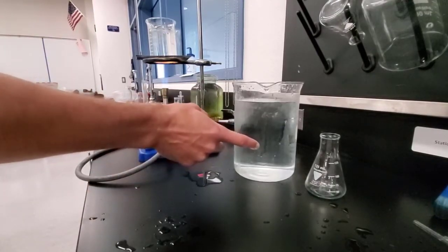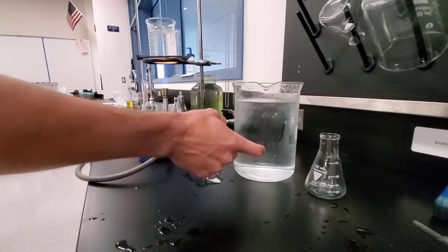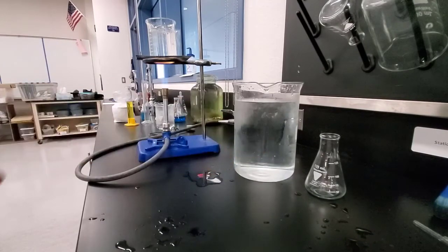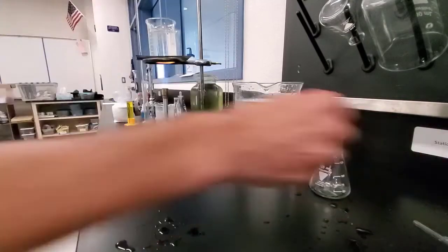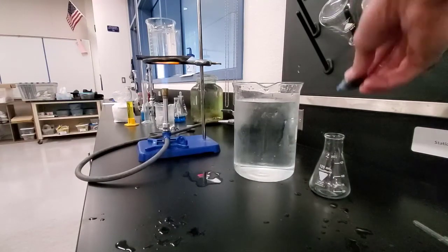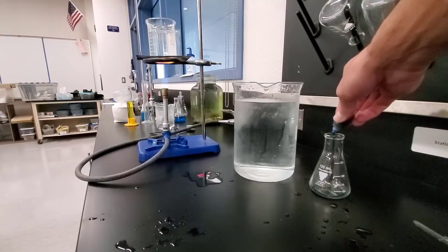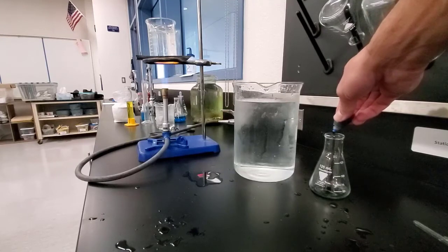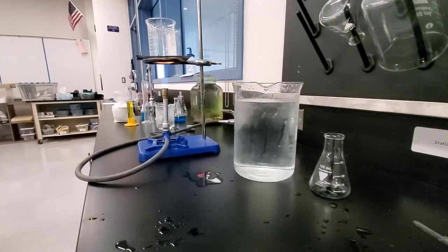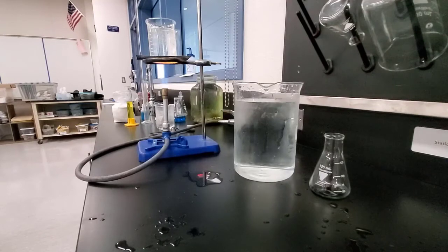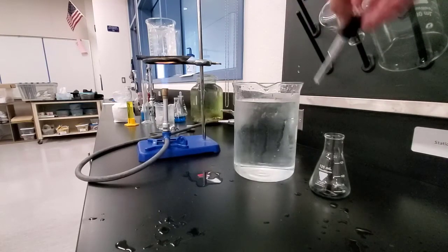All right, so ladies and gentlemen, I have a very large 2,000 milliliter beaker filled with water. It's slightly cooler water, and what I'm going to do is I'm going to place some drops of ordinary blue food coloring into the 125 milliliter Erlenmeyer flask.